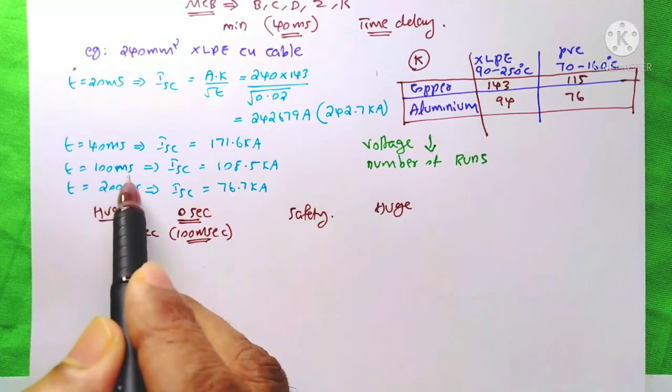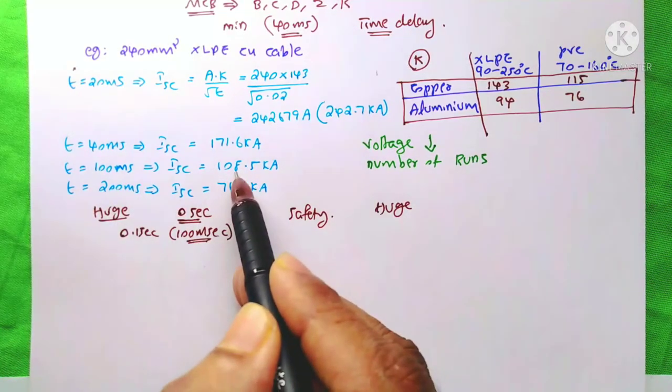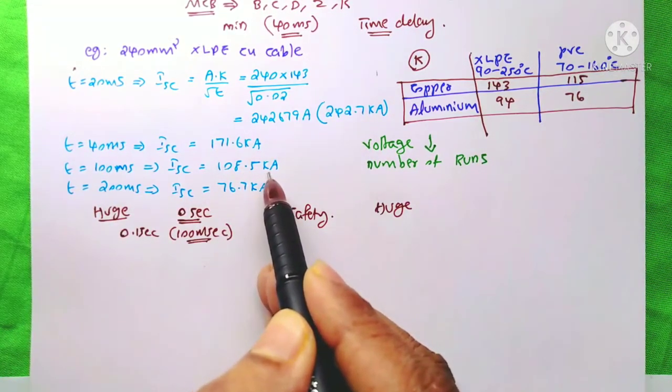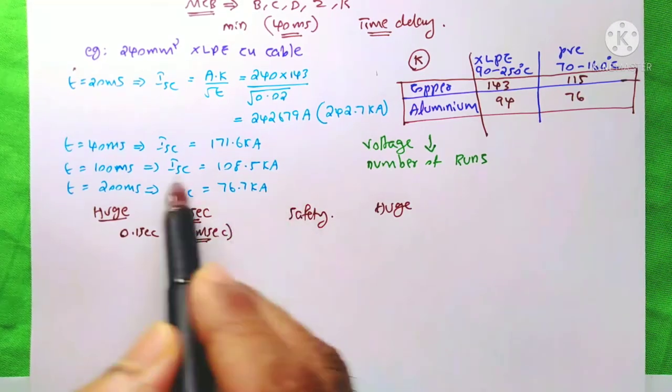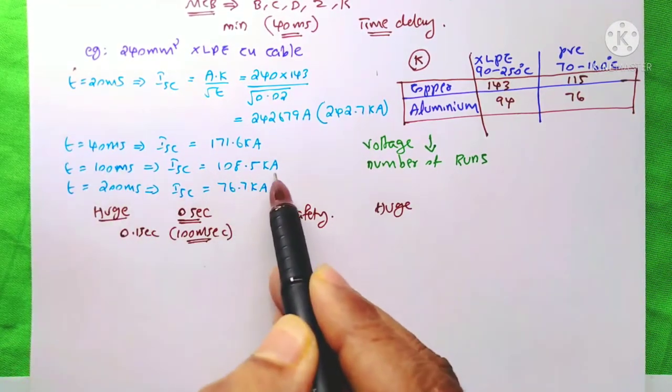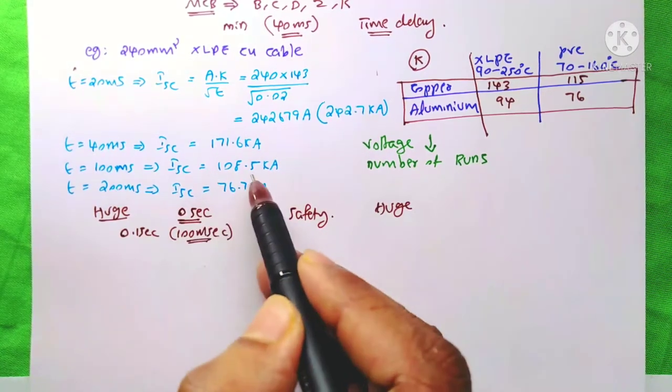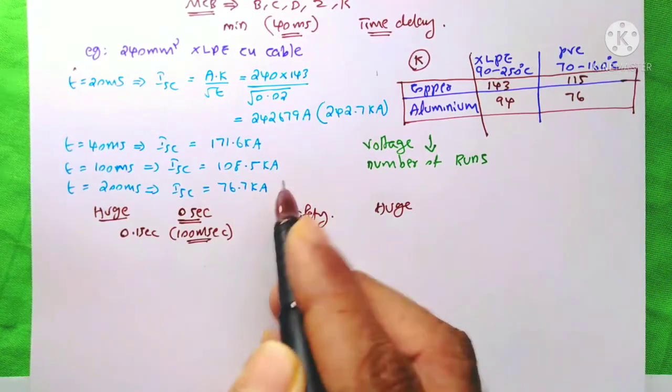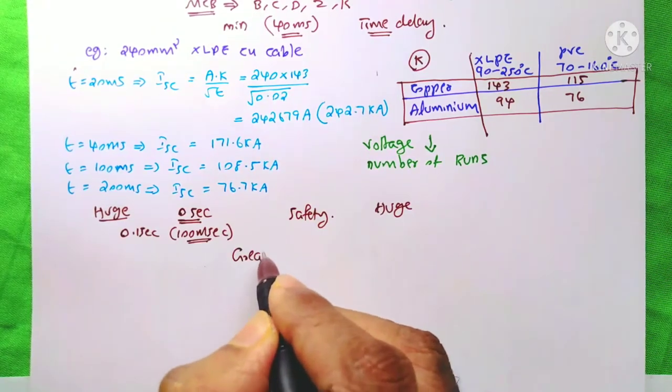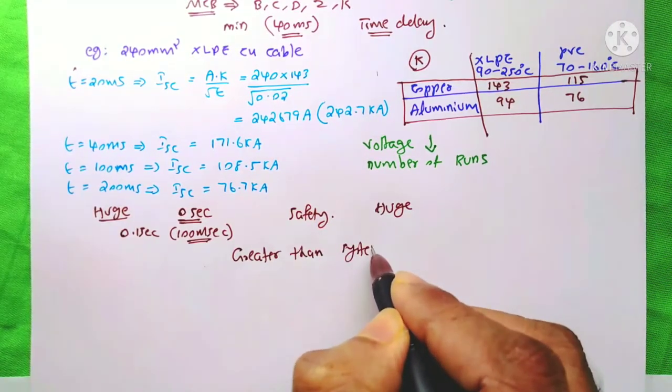But when you take 100 ms, it's reduced to 108 kA. When you take this 100 ms and at this time, if this short circuit capacity of the cable is greater than system short circuit capacity,